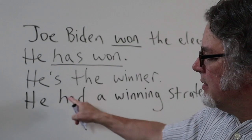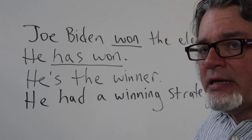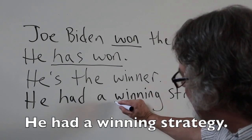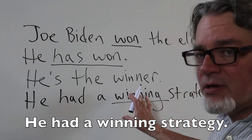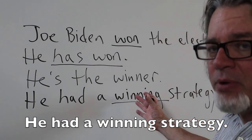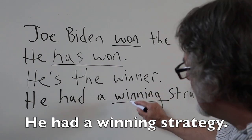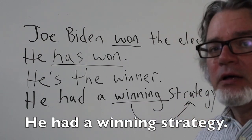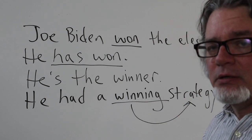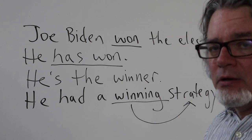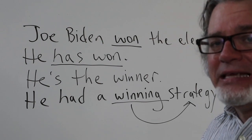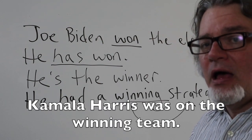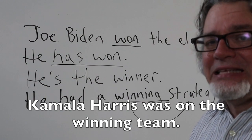And in this sentence, he had a winning strategy — so this is an adjective. It's the present participle, and it modifies the noun strategy. Or you can say, he was on the winning team, or Kamala Harris was on the winning team.